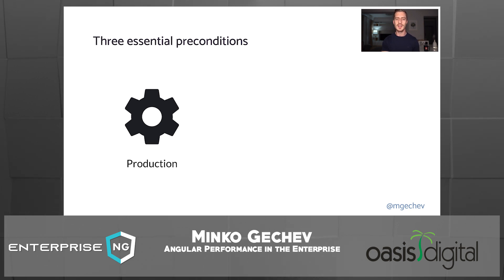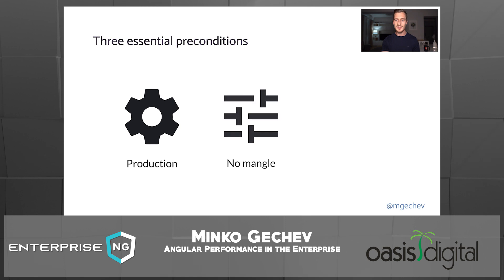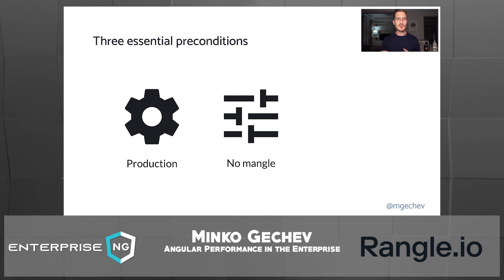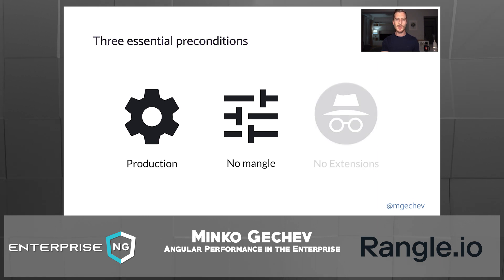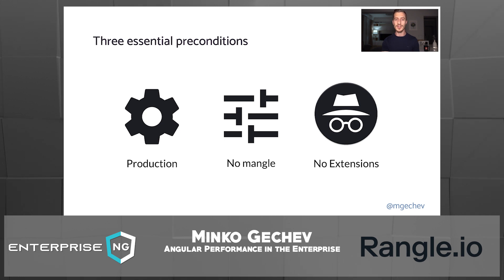Running a production build is required, because otherwise the CLI will not remove code that Angular uses only during development to guard us against common mistakes, such as circular bindings, for example. Next, we need to make sure we're not mangling the output of the CLI. This precondition is not as critical as the first one, but ensuring we have readable method and property names will help us identify the cause of issues we find. Finally, we need to make sure we're profiling the app without any browser extensions enabled. Extensions can add extra noise to the profiler and even skew the results if they plug into the app's execution lifecycle.